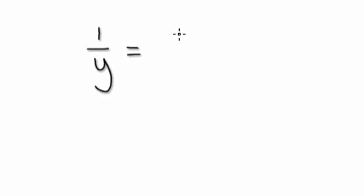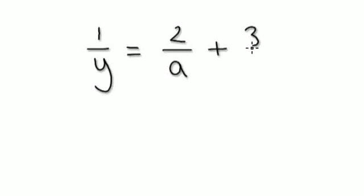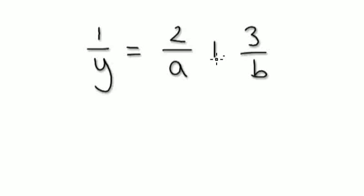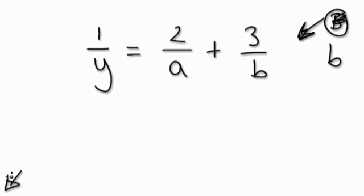Now your turn. Let's give you this: 1 over Y equals 2 over A plus 3 over B. Make B the subject — small B. Press pause and have a go.